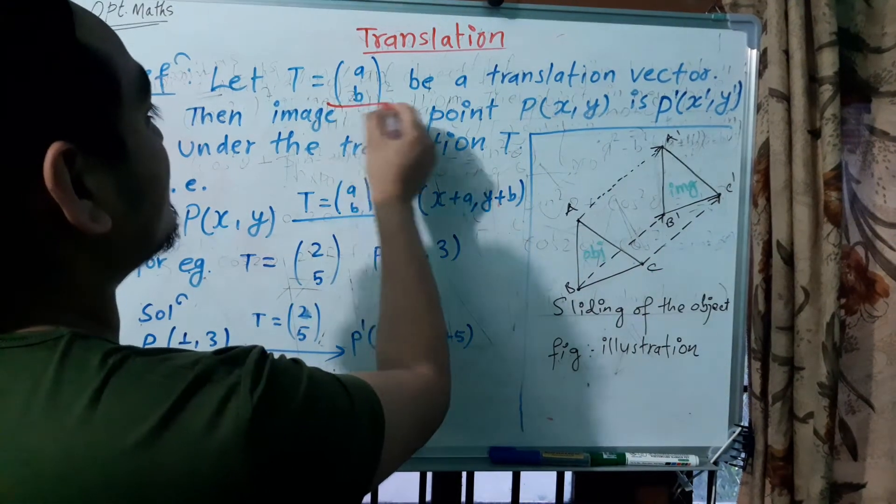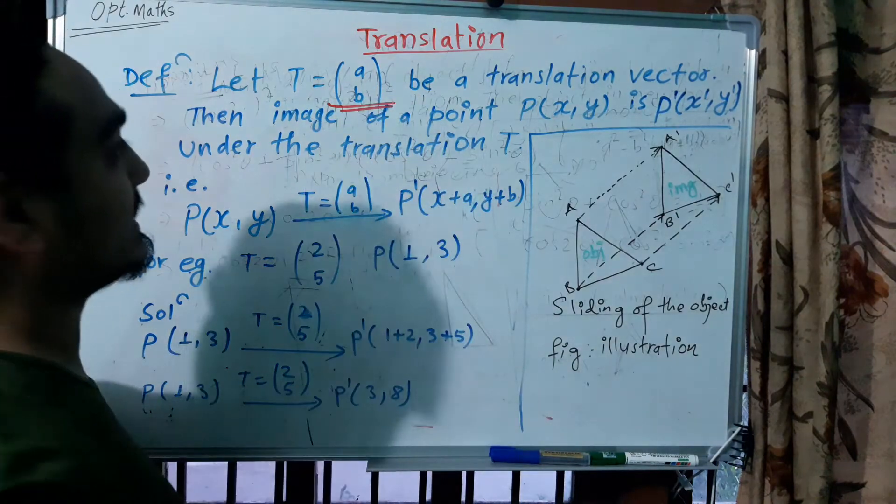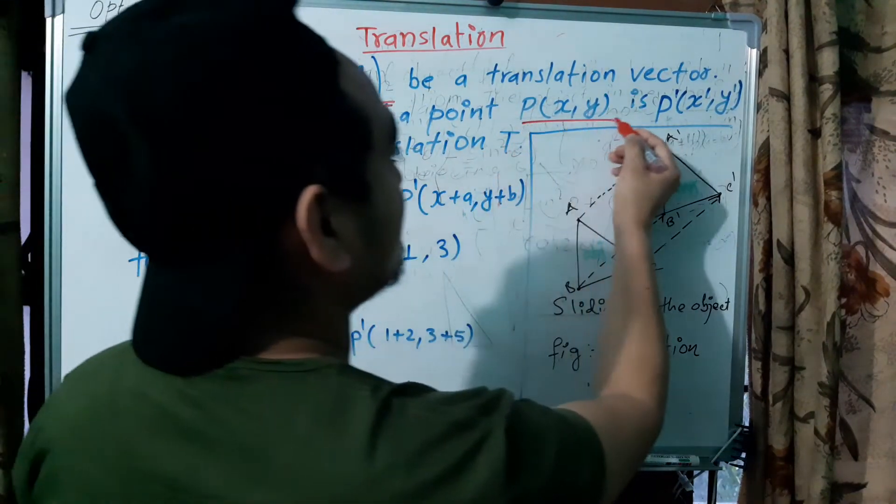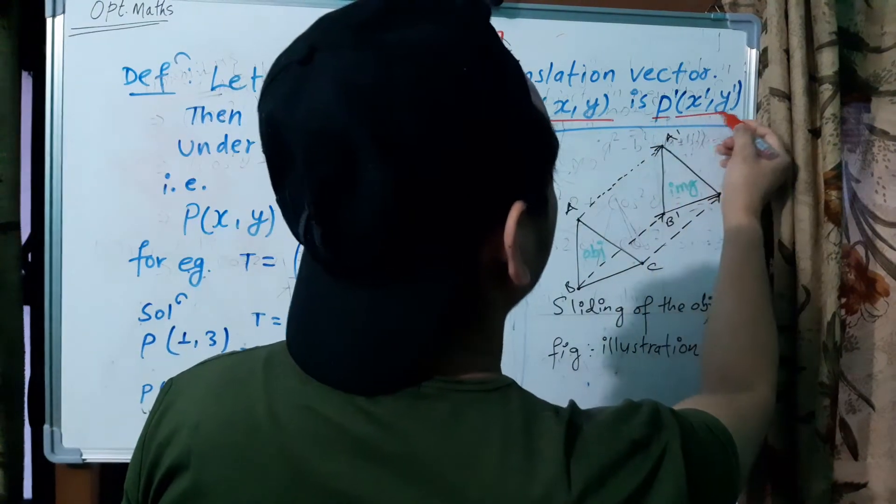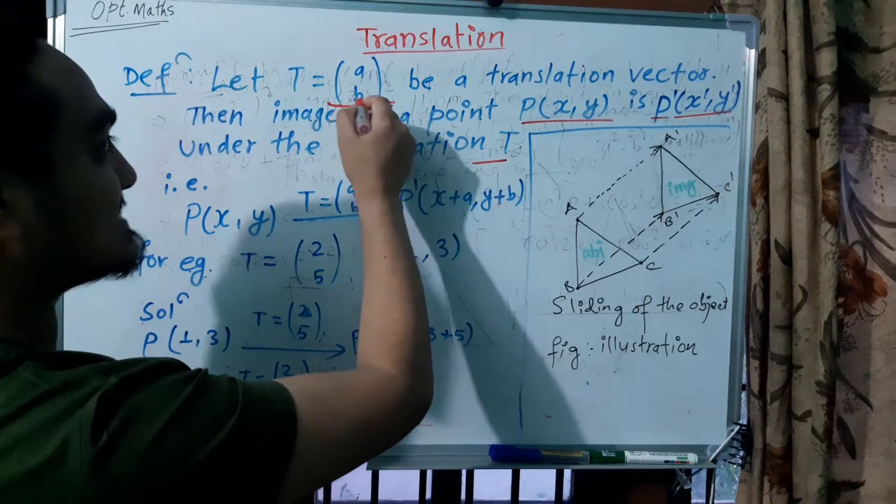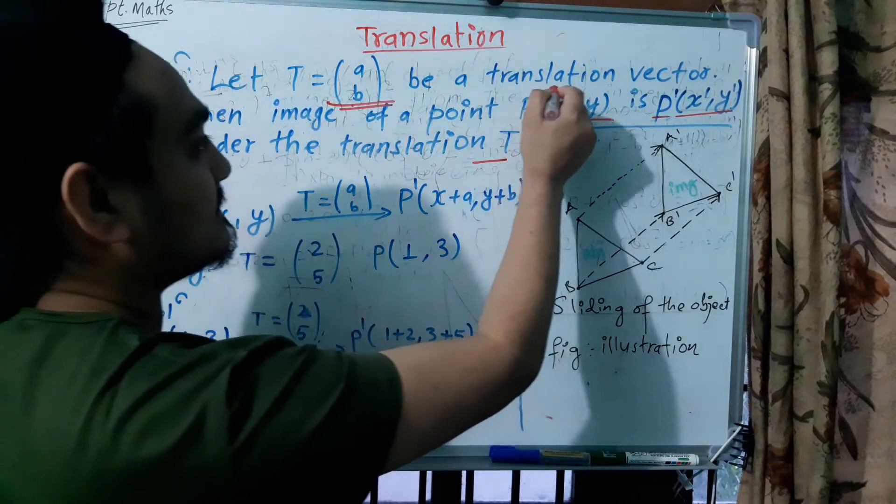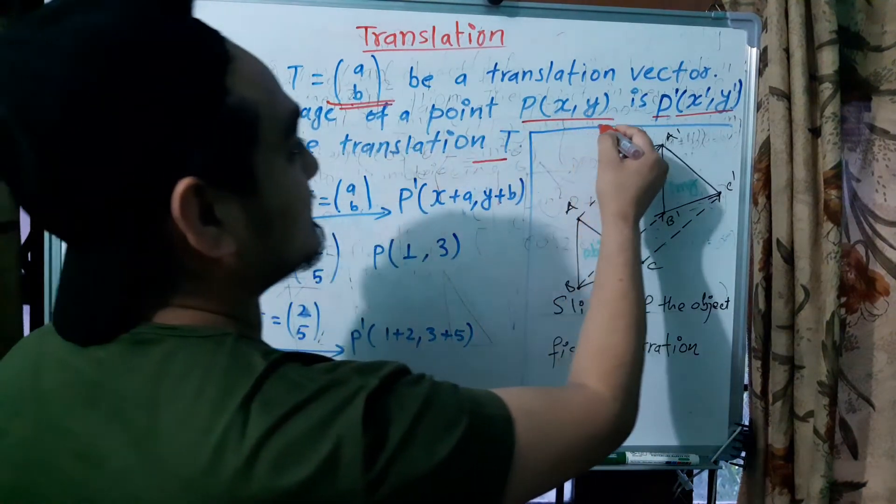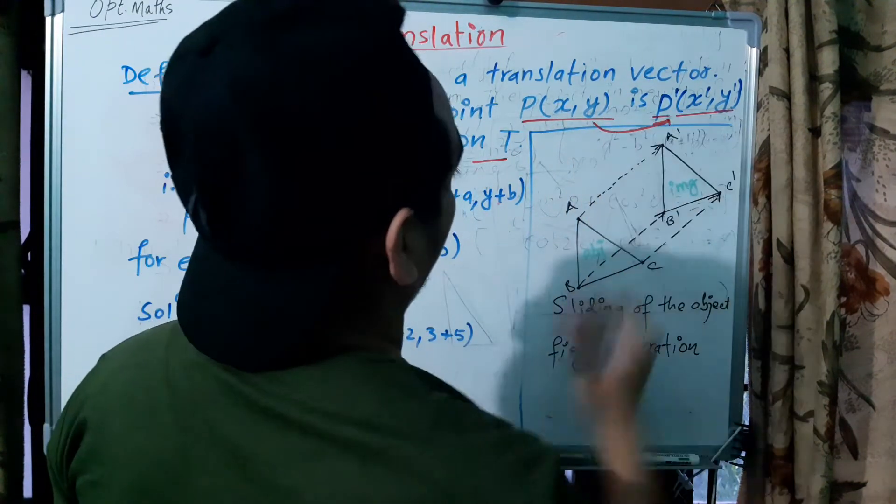Translation vector T equals (a,b). If you have a point P(x,y), under the translation T, which is the translation vector T=(a,b) like this, then you can see this image.